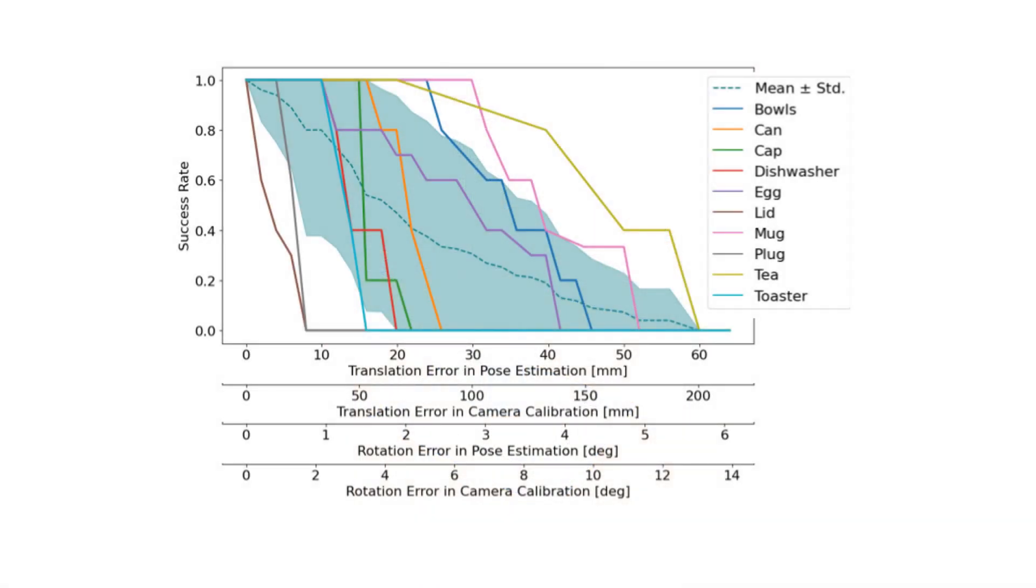The results for this experiment are shown in this graph. These results show that the task success rate for all considered tasks is more sensitive to pose estimation errors than to camera calibration errors.